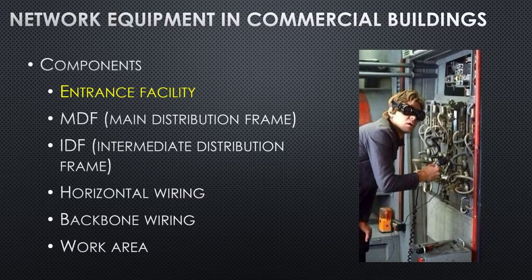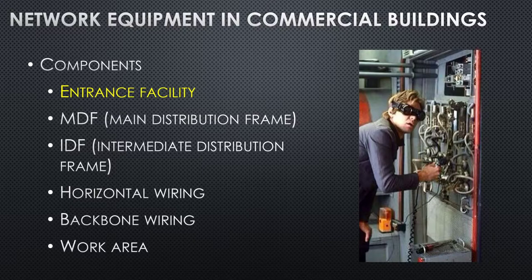The first component we want to talk about is an entrance facility. If you get hired and a new Panera is coming into town and they say get us some local internet for our office, you're going to need an entrance facility — this is where the external internet comes into the building. You'll have main distribution frames and then intermediate distribution frames to share that internet out to the rest of the building.